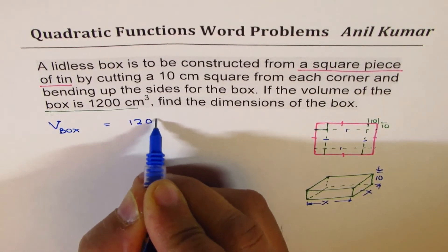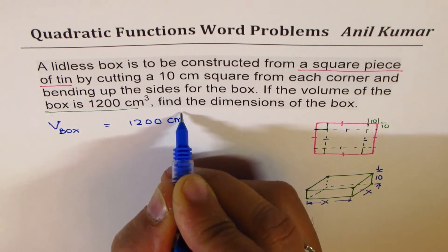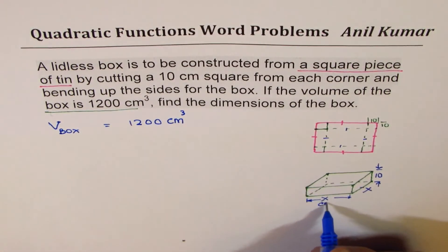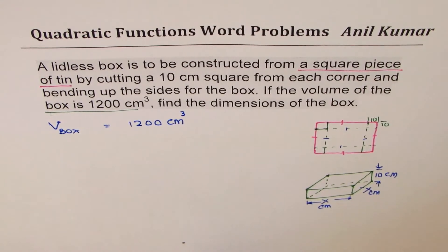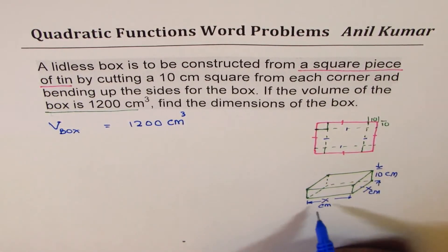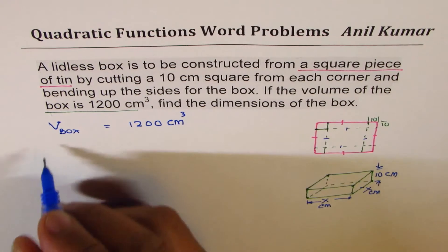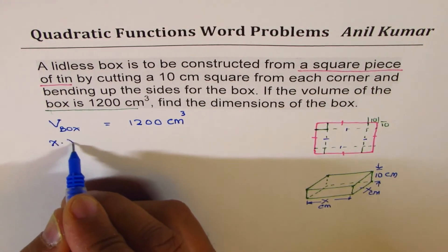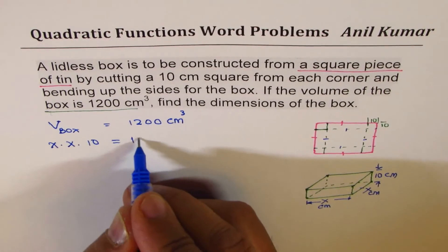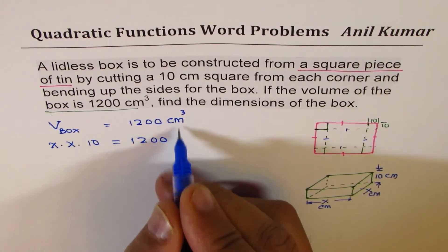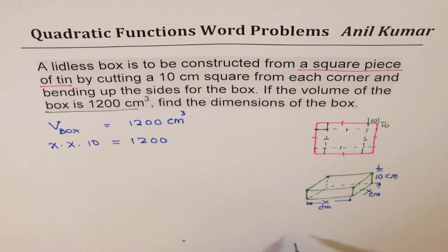This was also centimeters. Now what is volume? Area of the base into height. So we could write this as x times x times 10. We're talking about this box. Now is 1200. There's no need to write units, we'll include it in the solution, the answer.